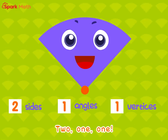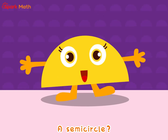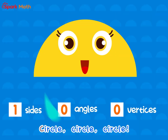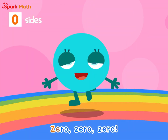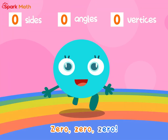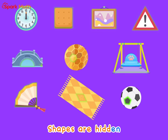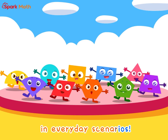But there are some shapes that are special. A quarter circle has two sides, one vertex, and one angle. A semicircle has one side, zero vertices, and zero angles. A circle has zero sides, zero vertices, zero angles. Shapes are hidden in everyday scenarios.